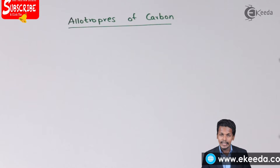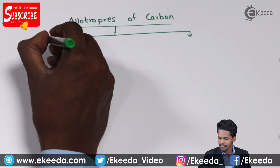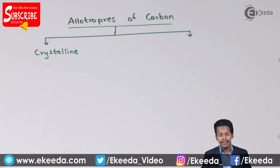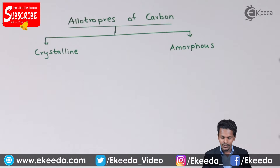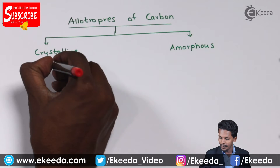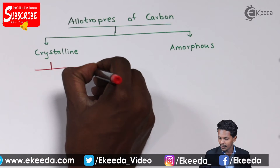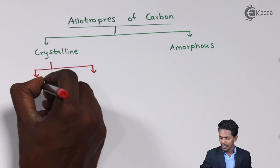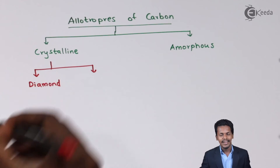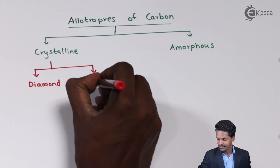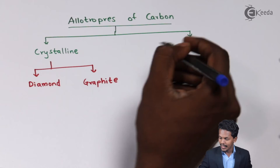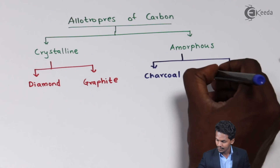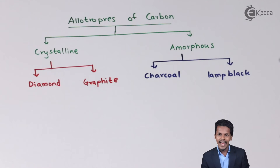Carbon is basically classified into two forms: crystalline form and amorphous form. The two main crystalline allotropes of carbon are diamond and graphite. The amorphous forms of carbon include charcoal and lamp black.